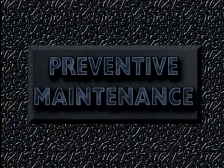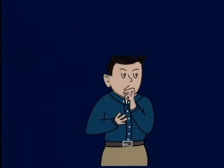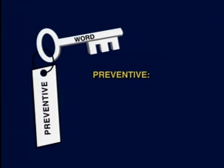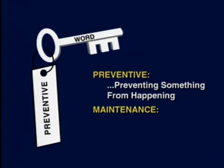Let's start by looking first at preventive maintenance. What is preventive maintenance? The key word here is preventive, which implies preventing something from happening. And maintenance simply relates to maintaining something in working order, whether it is plant equipment or our own car, before it breaks down.